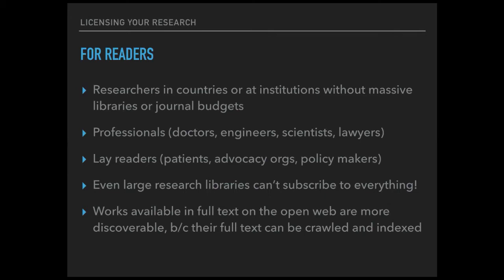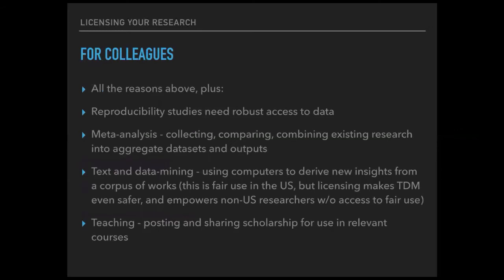Even large research libraries can't subscribe to everything. Works available in full text on the open web are just more discoverable — they can be full-text searched and crawled, which really facilitates discovery in an important way. Your colleagues will appreciate it when you license your research for all the reasons above. Plus, many kinds of research involve copying, reusing, and adapting existing research. Reproducibility studies, for example, need robust access to data and permission to reuse data so they can derive their own results. Meta-analyses — collecting, comparing, combining — are follow-up research that is incredibly important and powerful. The best way to ensure that the follow-on researcher has full access to your work is to give them a very clear statement in a license that permits them to do what they need to do.